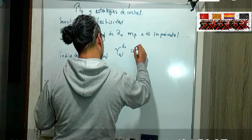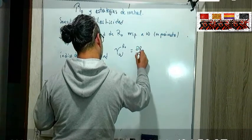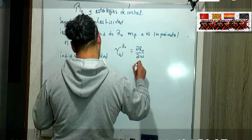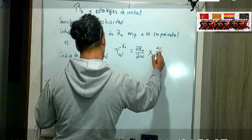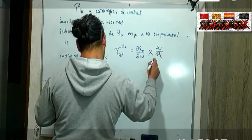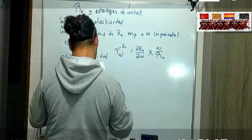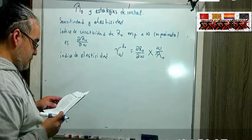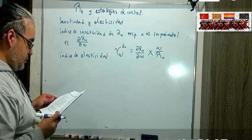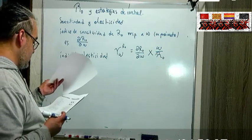Esa tasa de cambio pues nos va a dar un índice de sensitividad. Y el índice de elasticidad que en realidad pues es una sensitividad normalizada, lo denotamos con esta letra yota, omega R0 es la parcial de R0 respecto de omega por omega sobre R0, pues es ese producto.